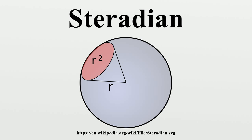By the same argument, the maximum solid angle that can be subtended at any point is 4π sr. Since A equals R², it corresponds to the area of a spherical cap, and the relationship H/R equals 1 − cos(θ) holds. Therefore, one steradian corresponds to the plane angle of the cross-section of a simple cone subtending the plane angle 2θ, which corresponds to a plane aperture angle of 2θ ≈ 1.144 radians or 65.54 degrees.